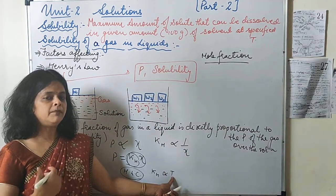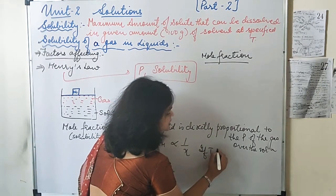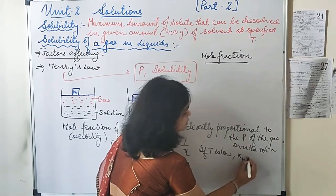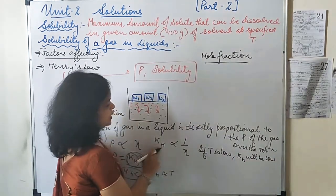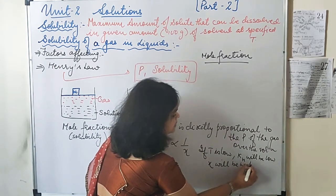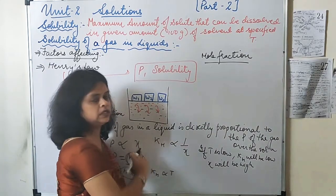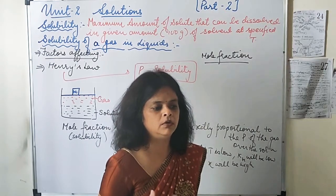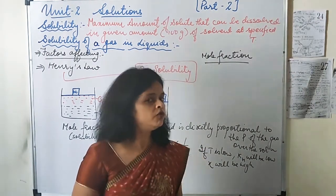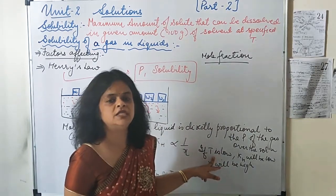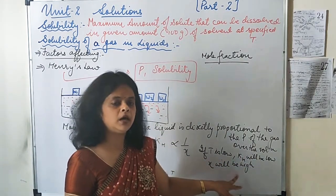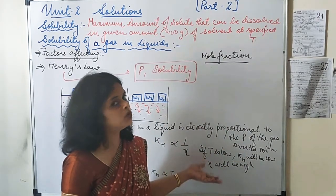If temperature is low, K_H will be low; if K_H is low, the mole fraction X will be high, meaning solubility of gases will be high. This explains a very commonly asked question: why are aquatic species more comfortable in cold water than in warm water? At low temperature, K_H is low, so solubility of gases is high, meaning more oxygen is dissolved — so aquatic species are more comfortable there.